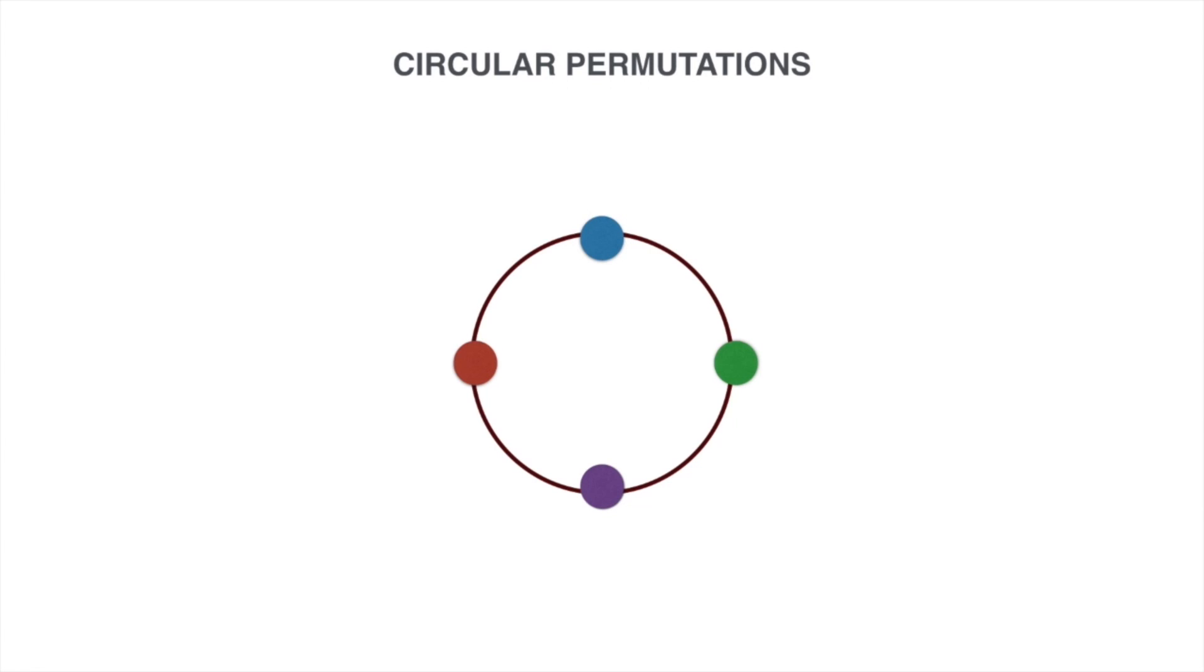This brings us to the final topic of this chapter which is circular permutation. Let us take a circle around which four different objects are distributed.